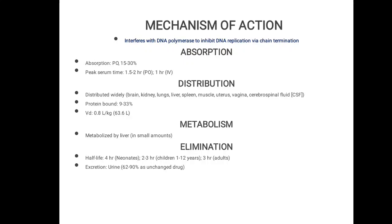Its distribution pattern: it is distributed widely in the brain, kidney, lungs, spleen, muscles, and all these areas. Its protein binding is 9 to 33 percent. Volume of distribution is 0.8 litre per kg.